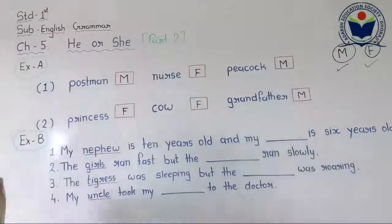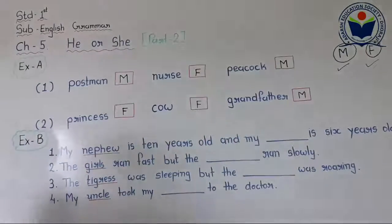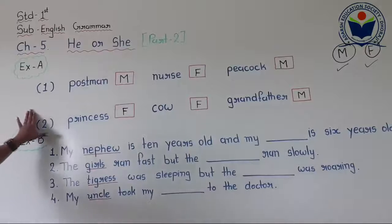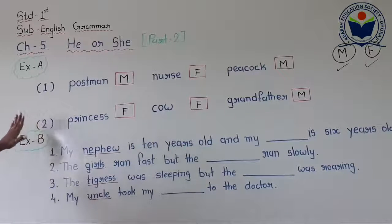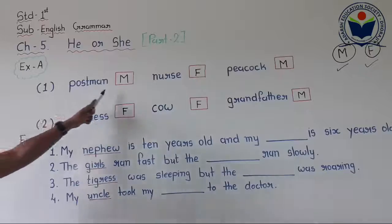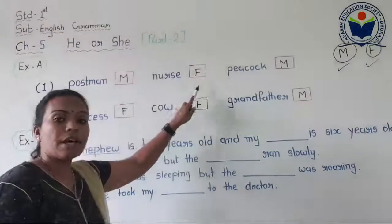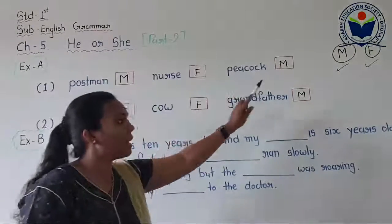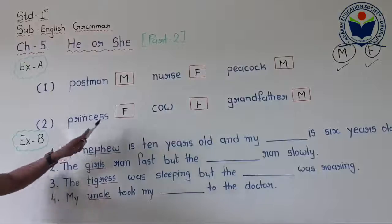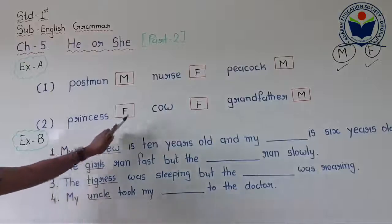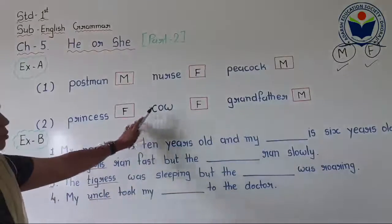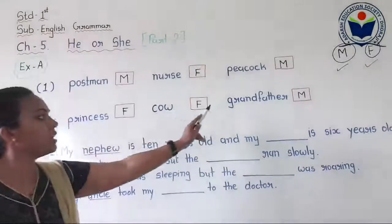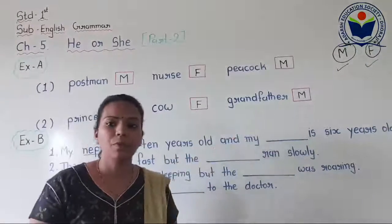Now students, let's repeat Exercise A one more time. Postman — M. Nurse — F. Peacock — M. Princess — F. Cow — F. Grandfather — M. Very good.